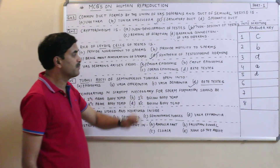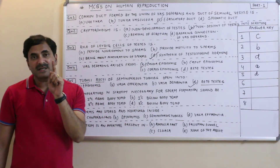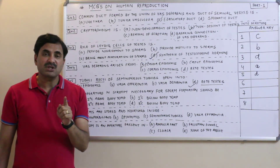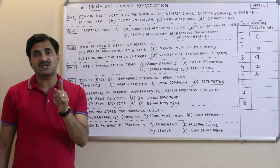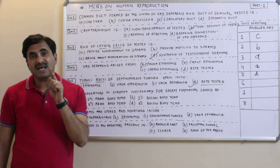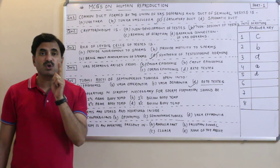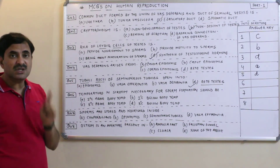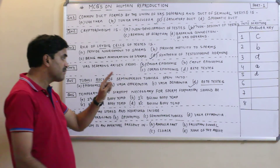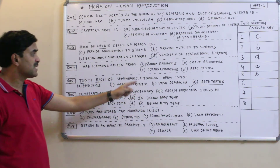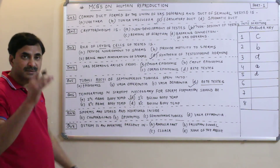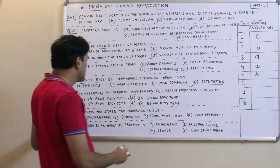Question six: Temperature in the scrotum sac necessary for sperm formation. The testes descend into the scrotum sac because of temperature conditions — the human body temperature is 37°C, at which spermatogenesis is not possible. The scrotum sac maintains a temperature at least 2 to 2.5 degrees Celsius less than body temperature, making spermatogenesis possible. So the answer is B — 2 degrees Celsius below body temperature.